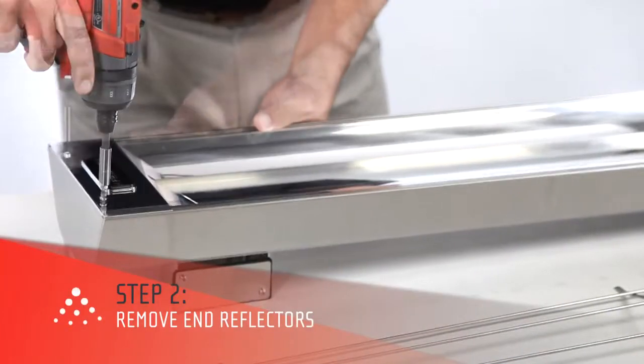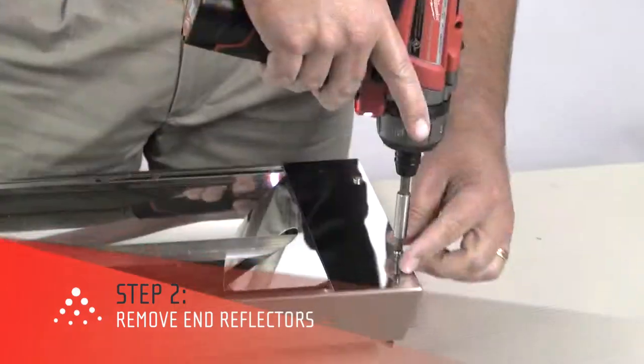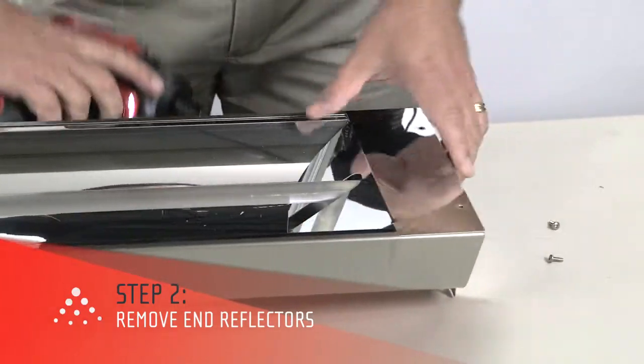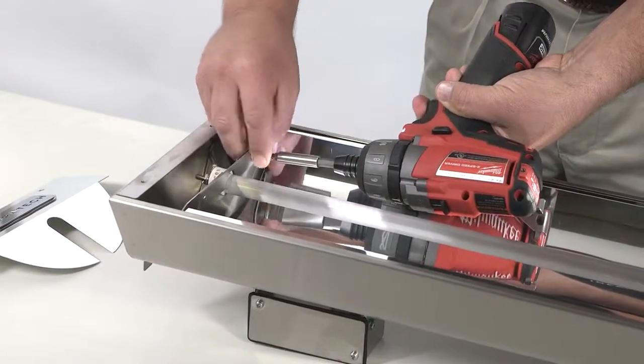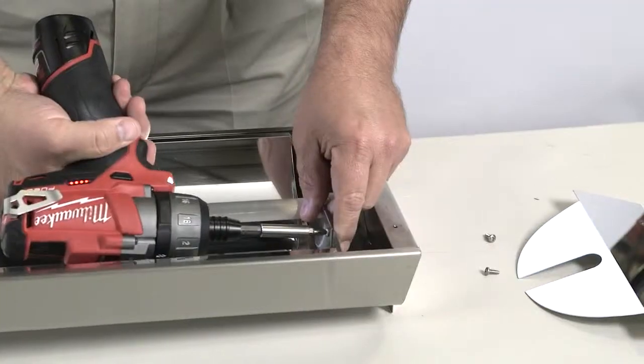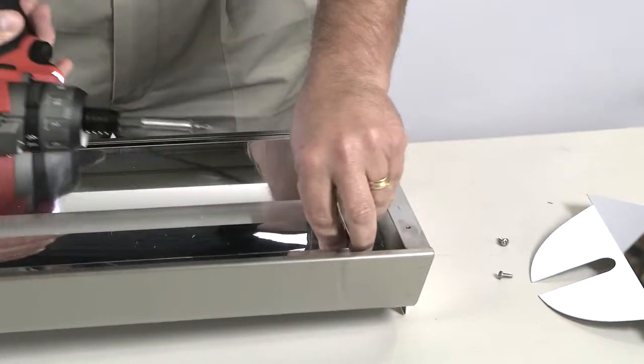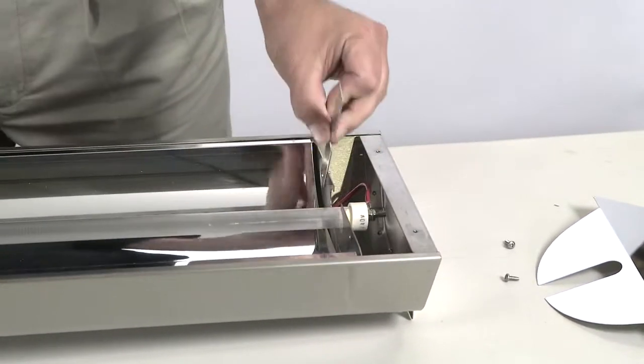Next, remove the two end reflectors by removing the two screws securing them to the heater. Remove the screws securing the retaining clips on each side of the heater. Release the retaining clip on both sides.